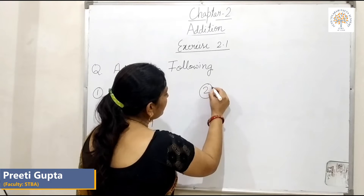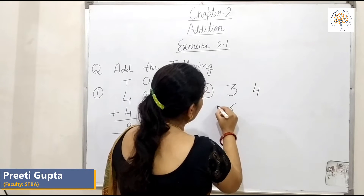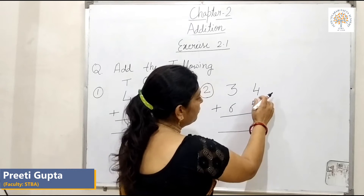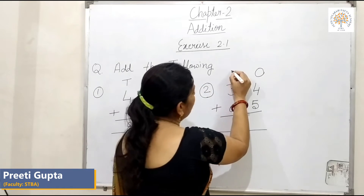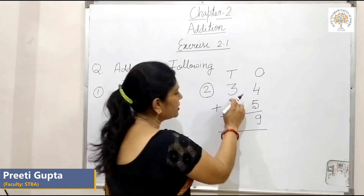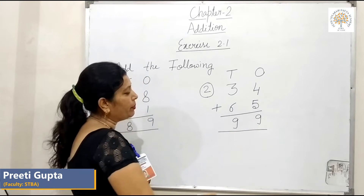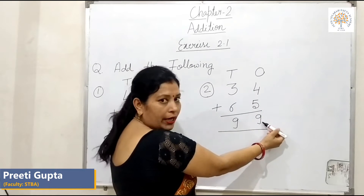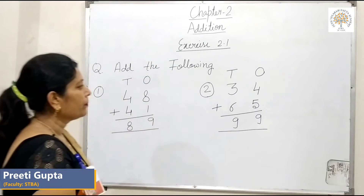Question number 2: 34 plus 65. 5 and 4 are in the 1's place, and 6 and 3 are in the 10's place. 4 plus 5 is equal to 9. 3 plus 6 is equal to 9. So our answer is 99.